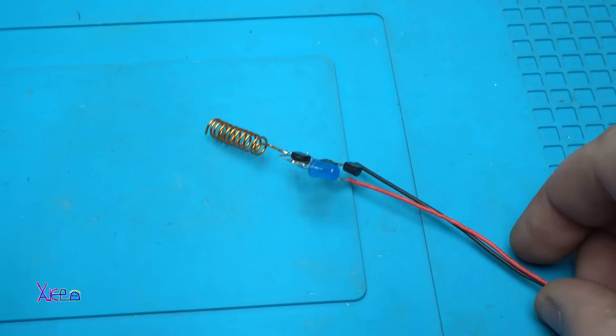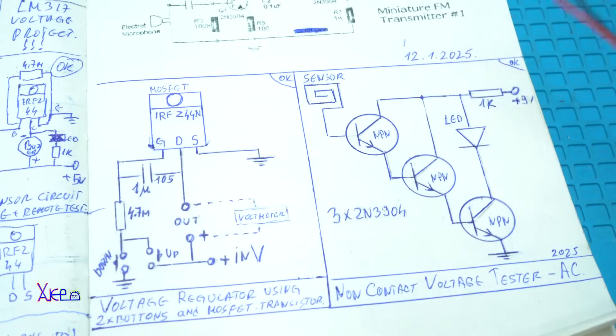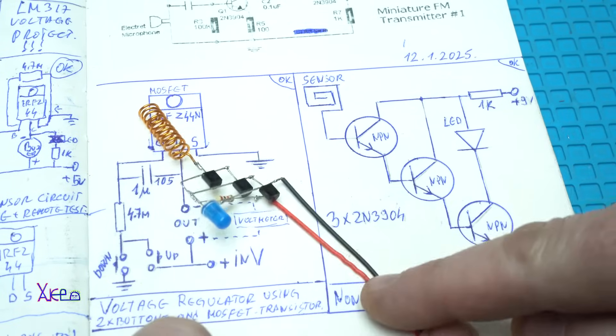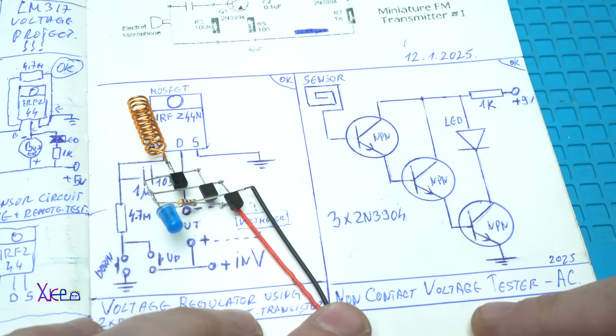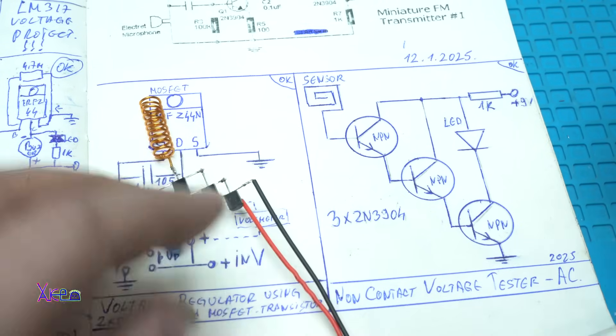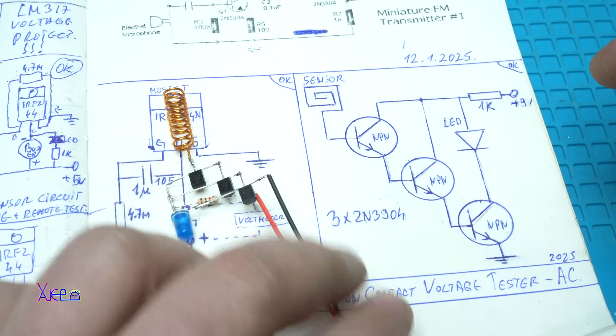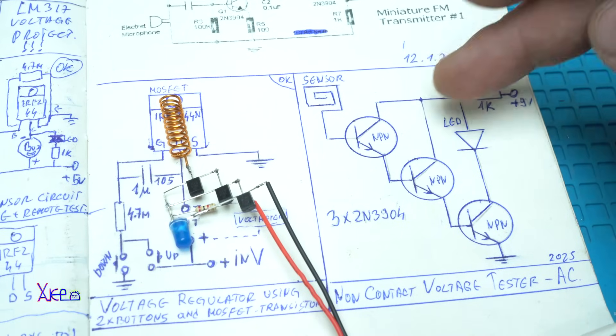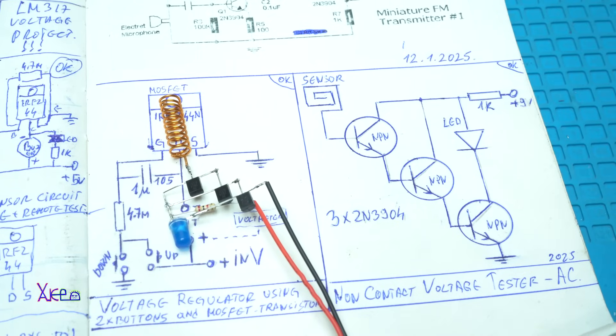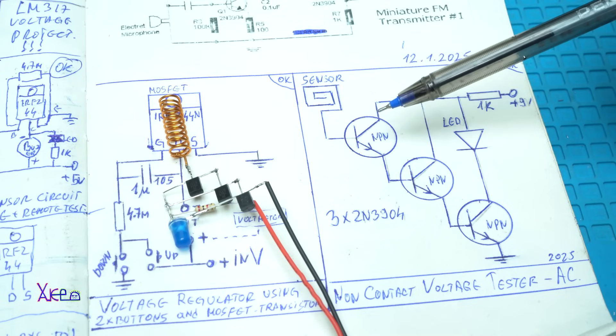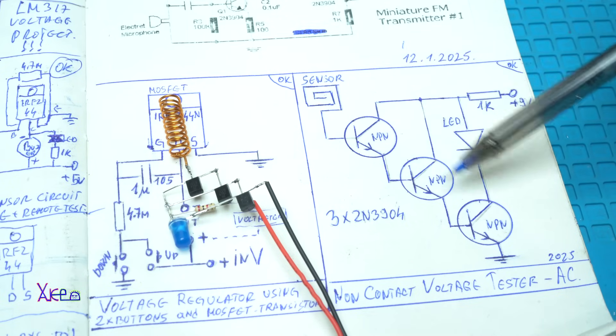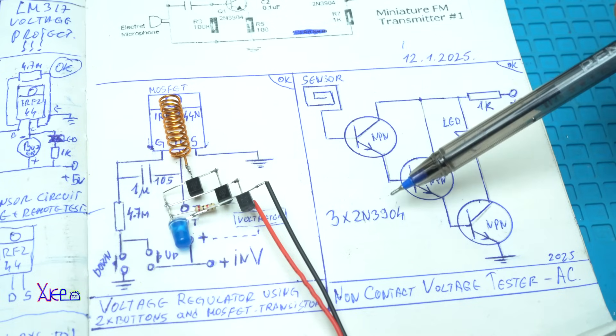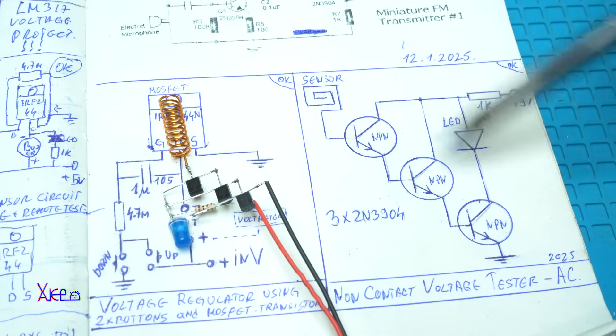So using only six electronic components, you can make a non-contact voltage tester for AC voltage or current. Here is the schematic. As I said, it's using three NPN transistors—in my case 2N3904 NPN transistors—one LED, one resistor of one kiloohm, and that's it.